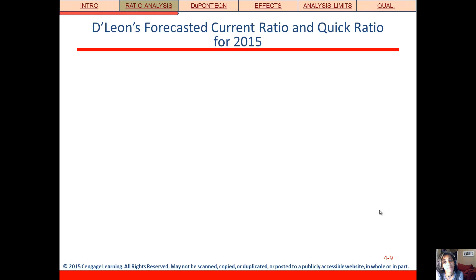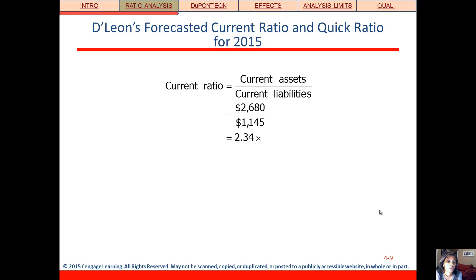We're following this same company — we had 2013 and 2014 numbers, and now we've got some estimated numbers for 2015. We'll walk through each of the five categories. First we're in liquidity, looking at the current and the quick ratios. The easy part is just plugging in the numbers. You've got a set of formulas and a set of financial statements, so it's just a matter of finding the right number and putting it in the right spot.